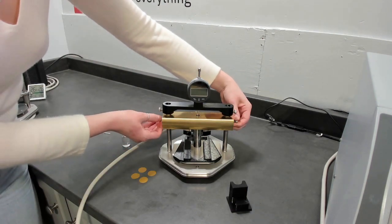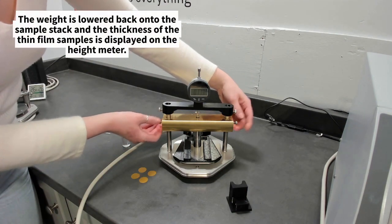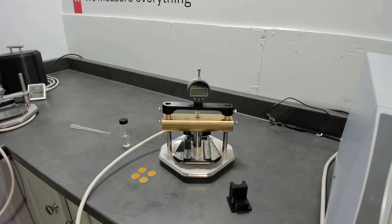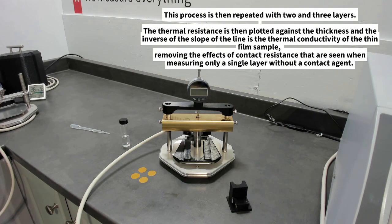The change in resistance with thickness allows us to draw a line through and calculate out the added resistance of each layer and ethylene glycol. We'll repeat this process for two layers and then three layers, and that will give us the slope. The inverse of the slope gives us the thermal conductivity, removing the effects of contact resistance.